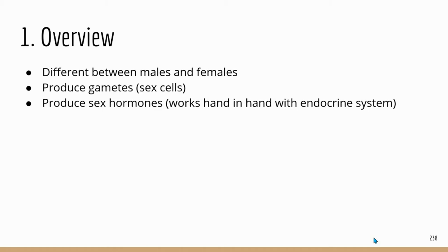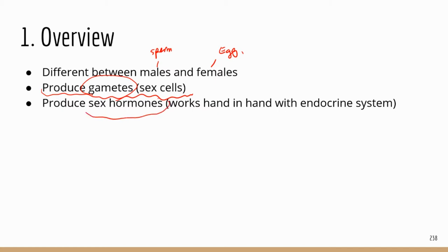A quick overview: the reproductive system is going to be different between males and females, but the overall goal is very similar. The goal is to produce gametes — basically sex cells. In males, that's sperm; in females, that's egg. Another goal is to produce sex hormones, which is really related to the endocrine system because the sex hormones are also part of the endocrine system. We're going to go over a few important sex hormones today.